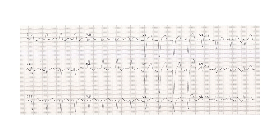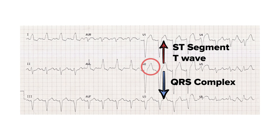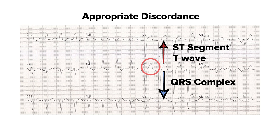On EKGs with left bundle branch blocks, it is normal to have discordance. In a left bundle branch block, the sequence of repolarization is altered, and the ST segment and T wave vectors are in the opposite direction to the QRS complex. This is what we call discordance, and in the setting of a left bundle branch block, this is normal — so we call this appropriate discordance. This is important to realize because these changes can mask the ST segment depression and T wave inversions caused by myocardial ischemia.